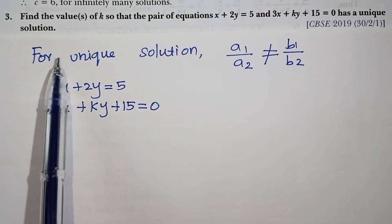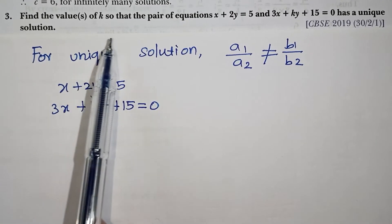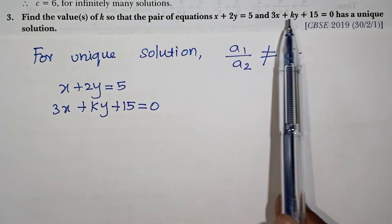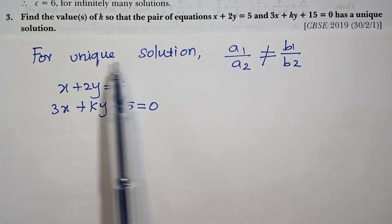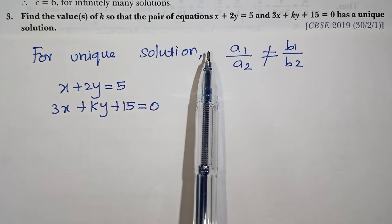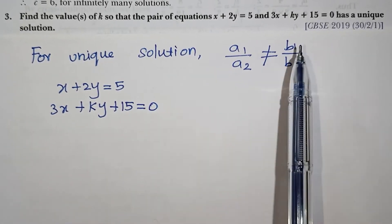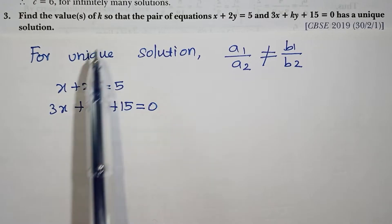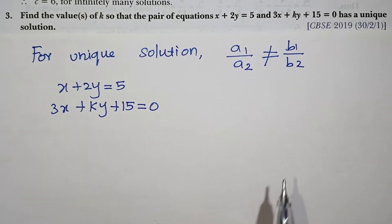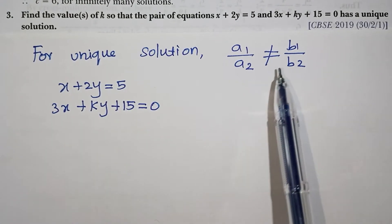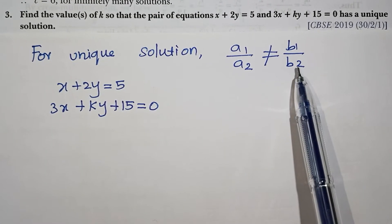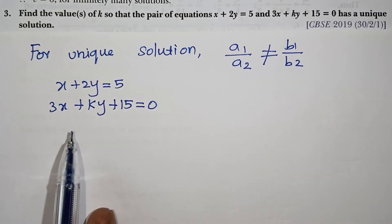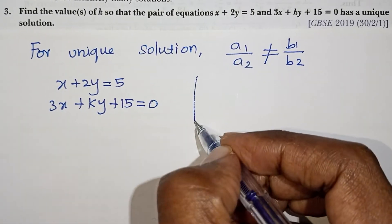In this question, find the values of k so that the pair of equations has a unique solution. The basic condition for a unique solution is a1 by a2 not equal to b1 by b2.